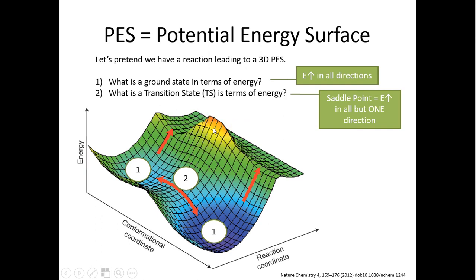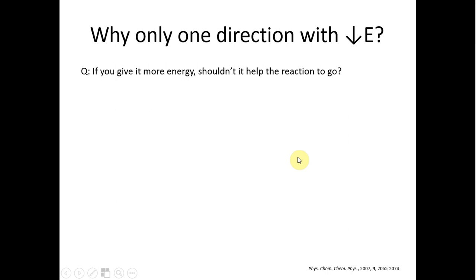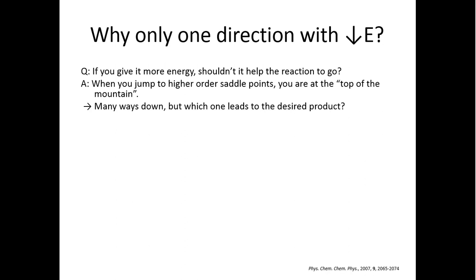So why, why only one direction? Why can't you go higher? Or at the peak of the potential energy surface, why do you have to have such a specific point that you're looking for? If you heat up your reaction more, you give more energy, you will go faster.